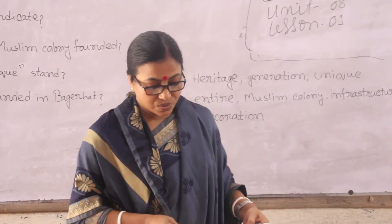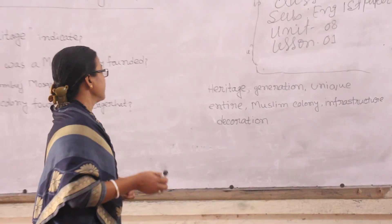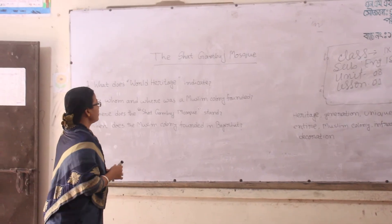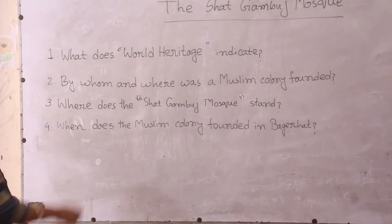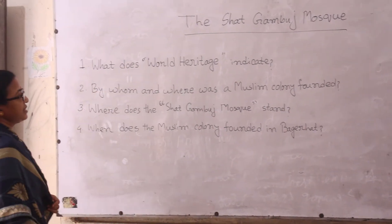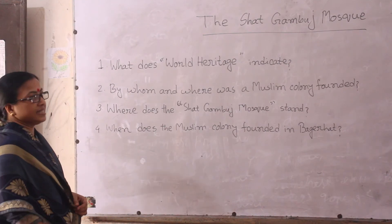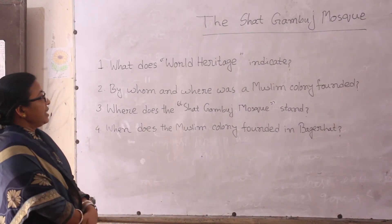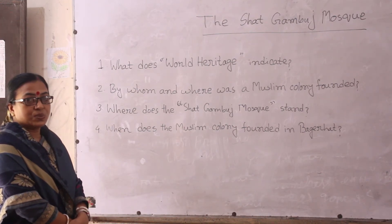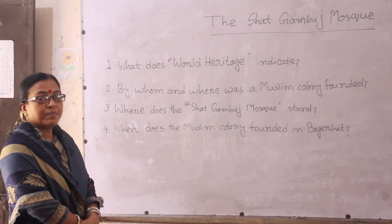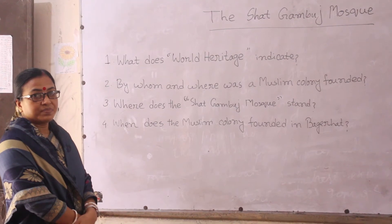Learners, now I will ask you some questions. Number 1: What does World Heritage indicate? World Heritage indicates places and sites that we inherited from the past and pass on to the future generation of the entire world.